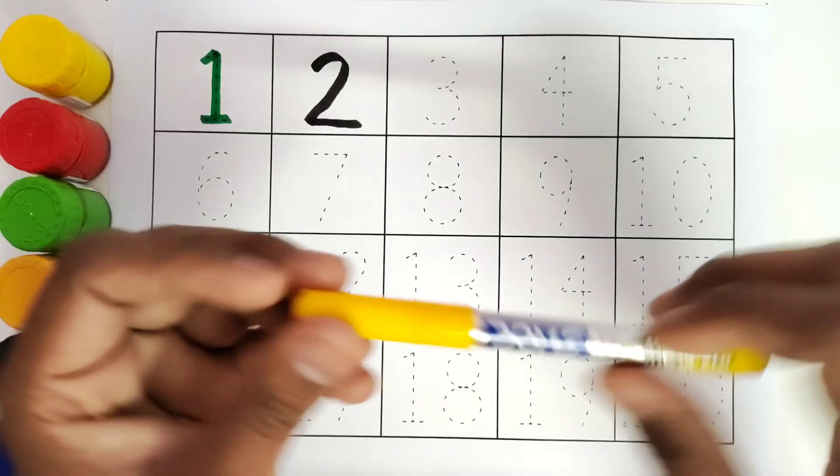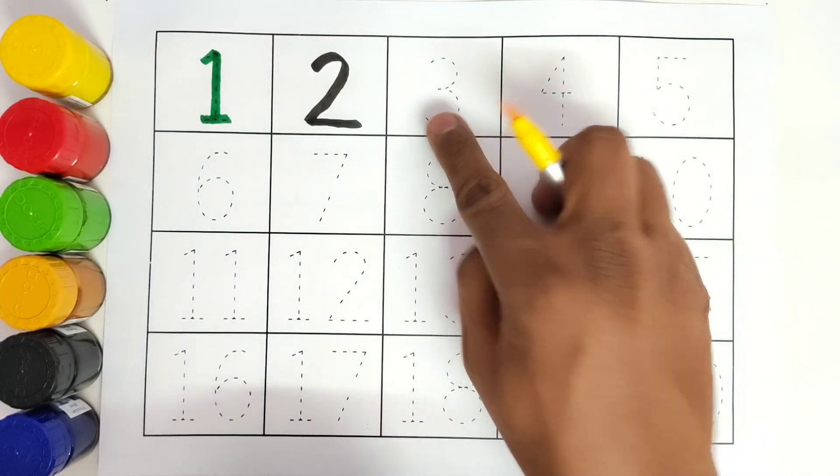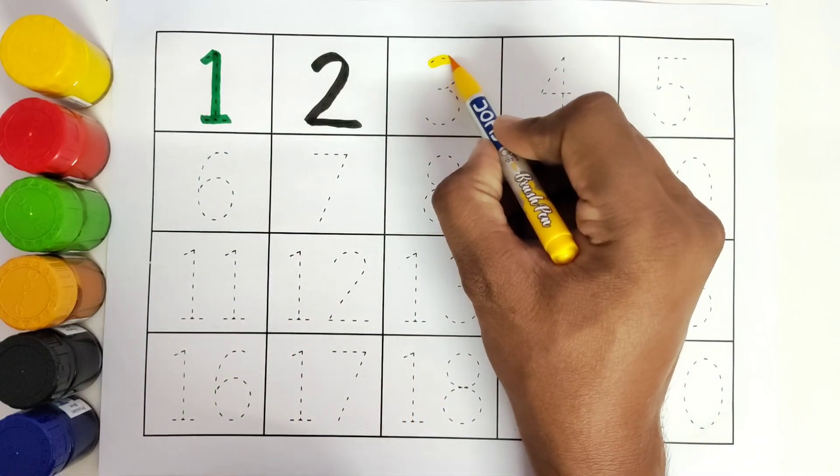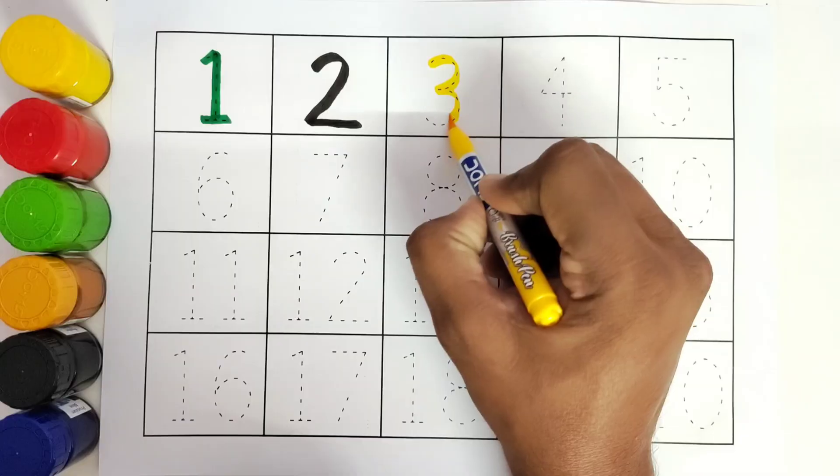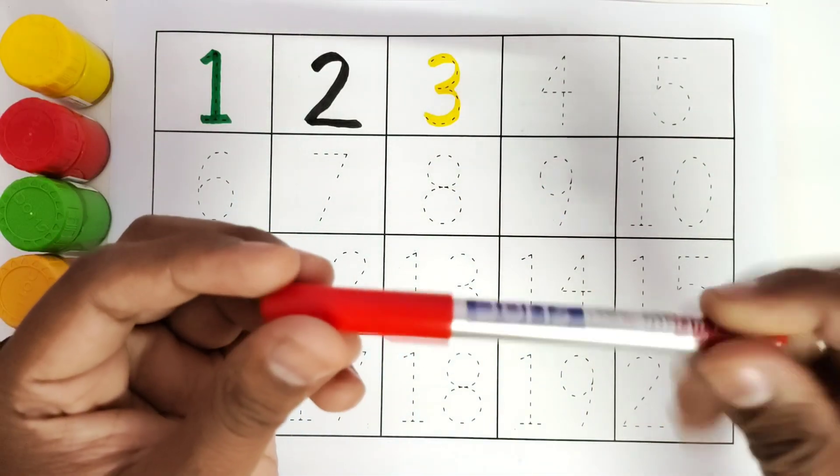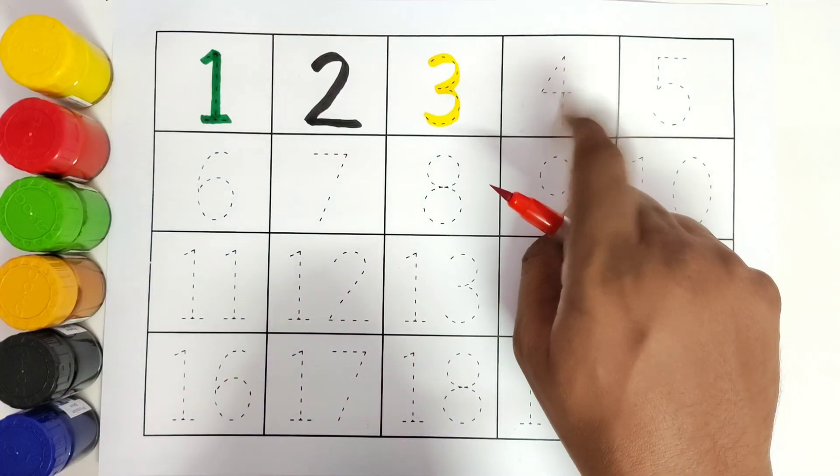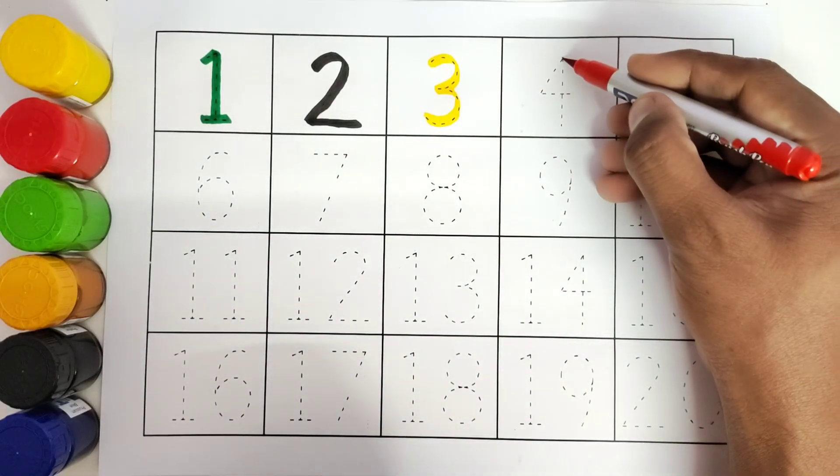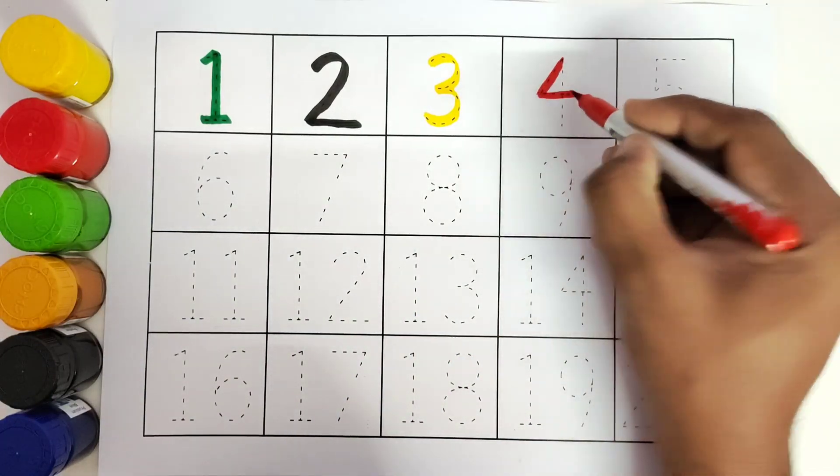This is yellow color. Number 3. We will trace the number 3. This is red color. Number 4. We will trace the number 4.